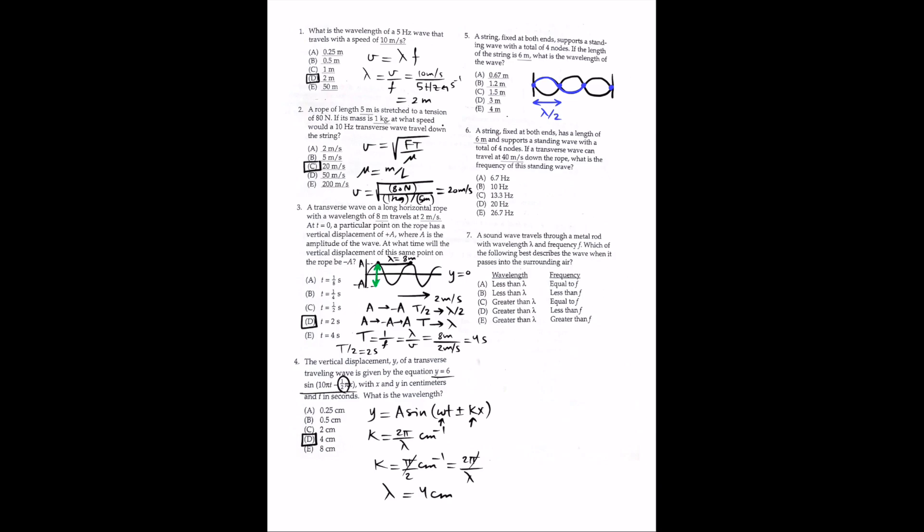For question 5: a string fixed at both ends supports a standing wave with a total of 4 nodes. If the length of the string is 6 m, what is the wavelength? The distance between 2 nodes always equals half a wavelength. With 4 nodes, the string spans 3 half-wavelengths. So L = 6 m = 3(λ/2), giving λ = 12/3 = 4 m. The answer is E.